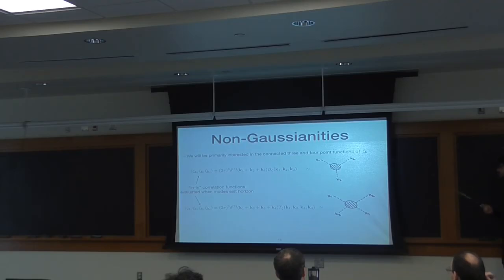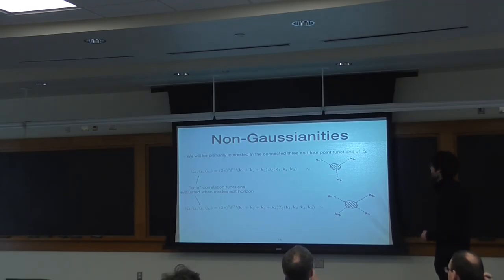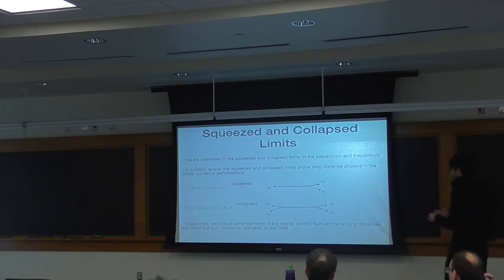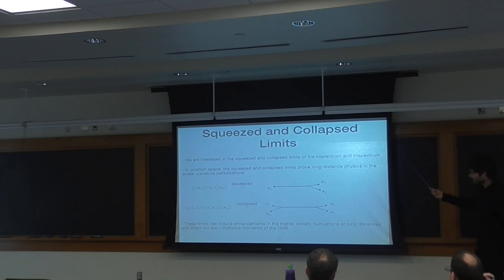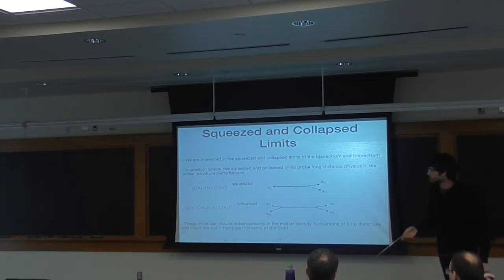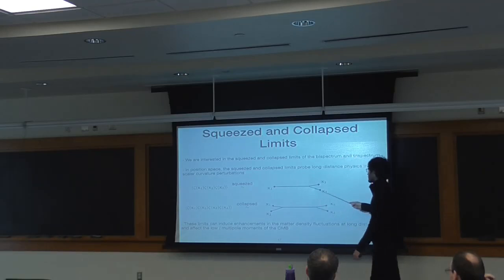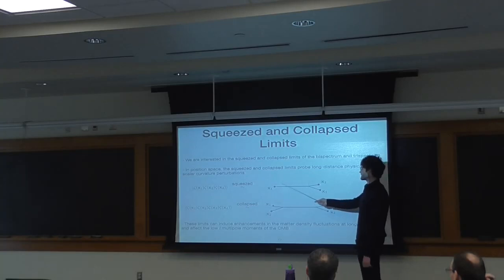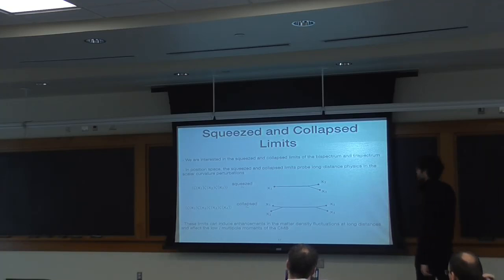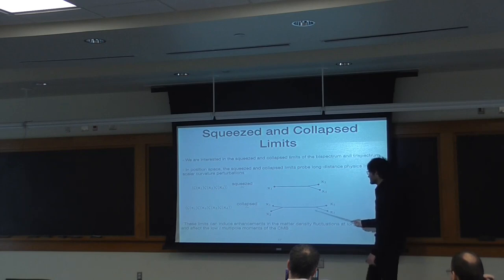I'll be taking these to occur at formal time tau equals zero, and by convention inflation occurs before that time. The bispectrum and trispectrum are functions of three and four momenta and have a lot of information. We're really interested in the squeezed and collapsed limits of the bispectrum and trispectrum. In position space, the squeezed limit probes long-distance physics: you evaluate zeta at one point very far away from two other points which are spatially close together. In Fourier space, this means one wave vector is much smaller than the others. For the trispectrum, four points come in pairs of two, with the pairs very far apart, and again you'll have one wave vector in Fourier space much smaller than the other two.